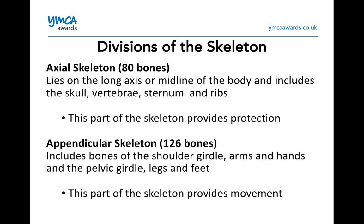Everything on the outside — your legs, arms — they're all part of the appendicular skeleton. So you've got your shoulder girdle, arms and hands, pelvic girdle, legs and feet — that's all appendicular. The appendicular provides the movement, whereas the axial provides the protection for our body. You usually get a question on the division of skeletons, so it's worth making a note, as it does crop up in the exam.